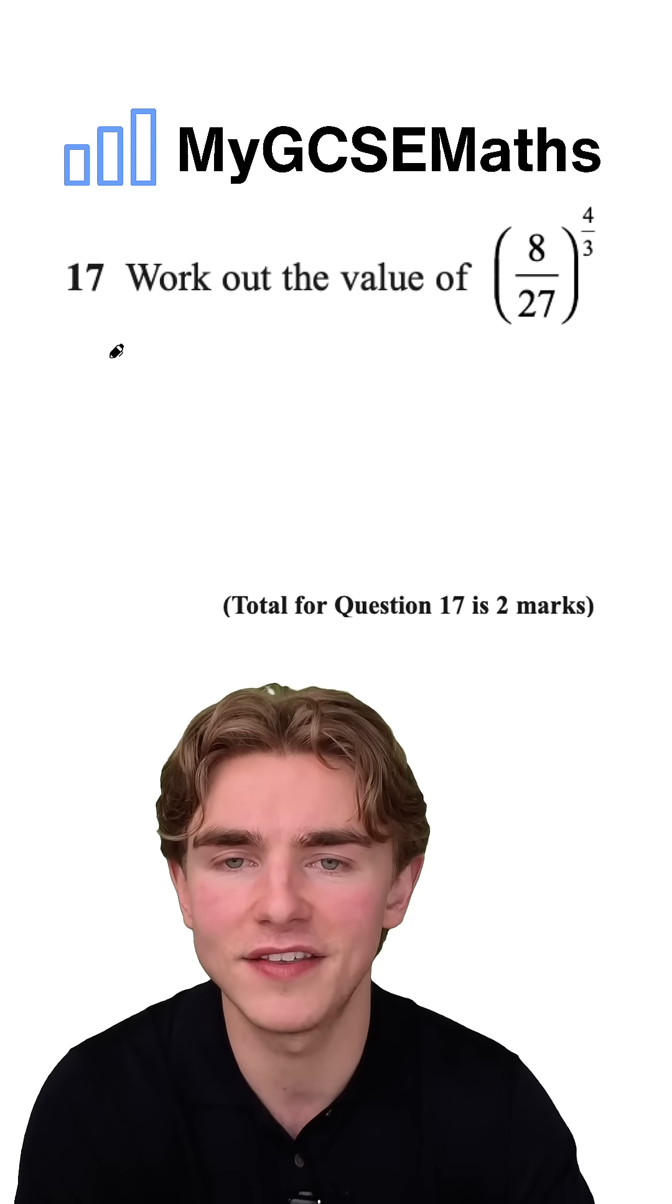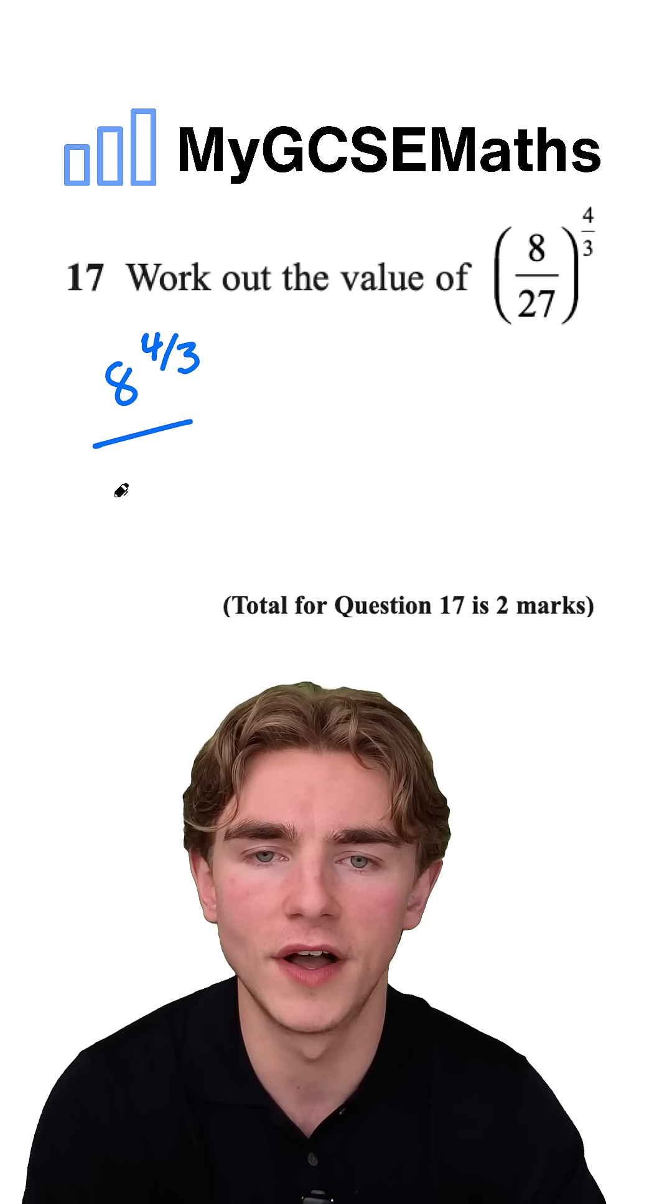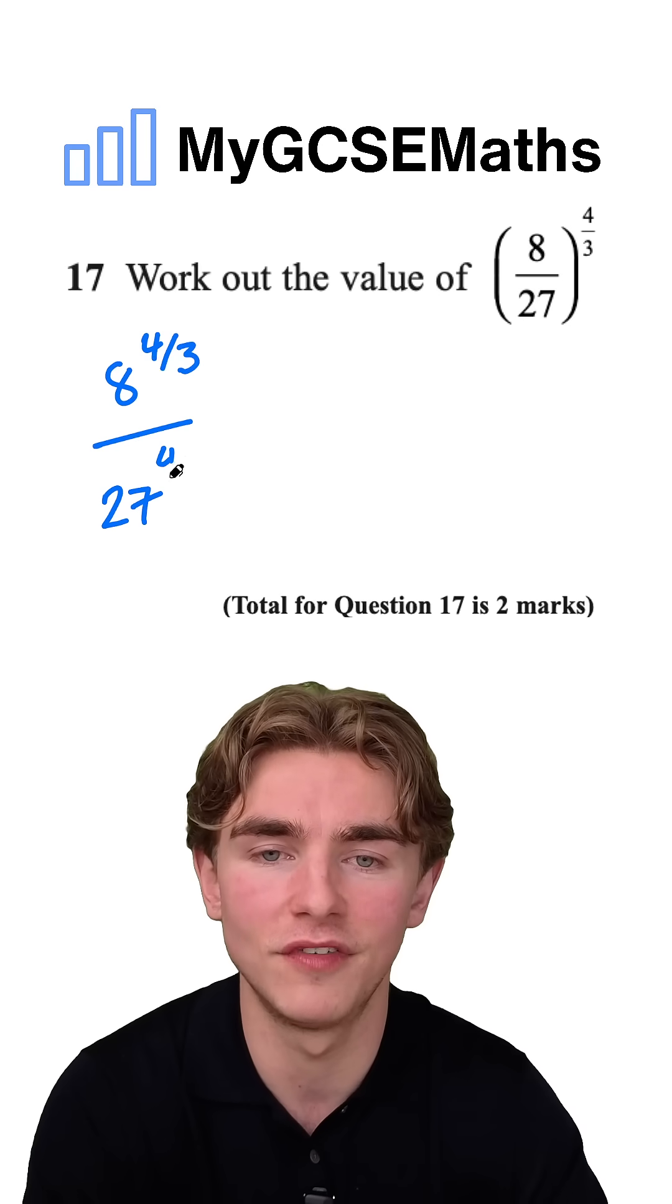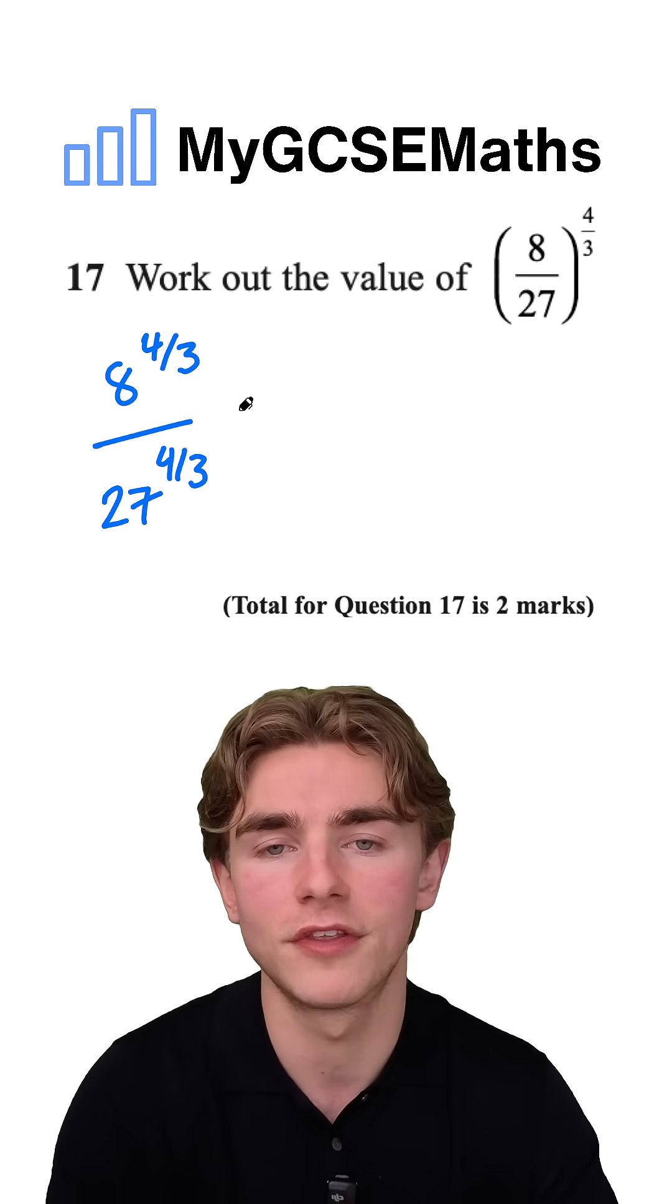We can start off by writing this as 8 to the power of 4 over 3 over 27 to the power of 4 over 3. So a fraction to a power, we do the top and the bottom both to the power.